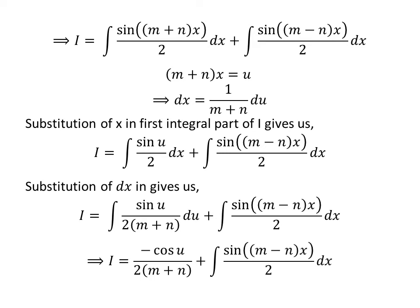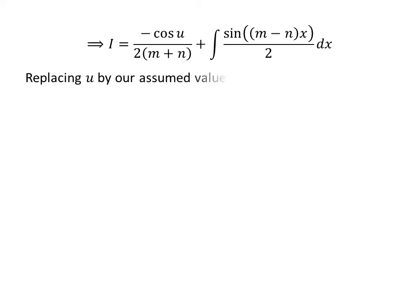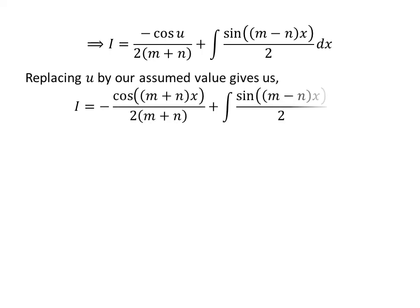The integral of sine of u is minus cosine of u. So I is equal to minus cosine of u upon 2(m plus n), plus the integral of sine of (m minus n) times x upon 2 with respect to x. Substituting back u by its value, I is equal to minus cosine of (m plus n) times x upon 2(m plus n), plus the integral of sine of (m minus n) times x upon 2 with respect to x.